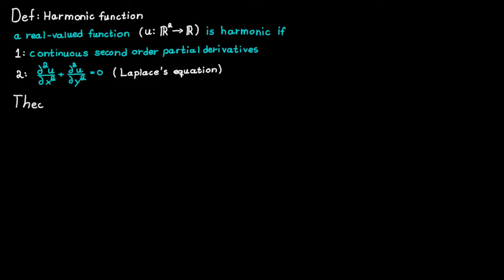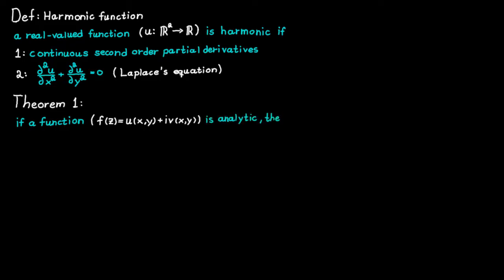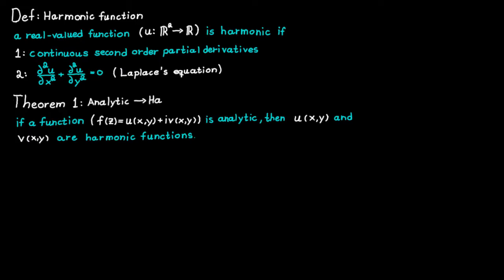Let's uncover some relations between analytic functions and harmonic functions. If a function f, which is equal to u plus i times v, is analytic, then the functions u and v are both harmonic functions. This theorem tells us how analytic functions can lead to harmonic functions.